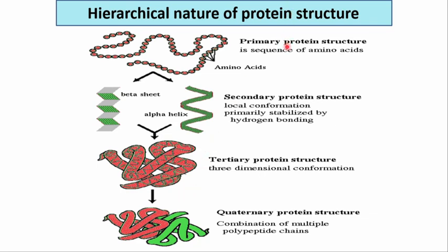Summarizing all four layers: primary structure is the amino acid sequence; second layer is local conformations; then tertiary structure — the complete 3D geometry. For proteins that are only monomeric, tertiary structure is the final level. For multimeric proteins, you must consider quaternary structure. Secondary, tertiary, and quaternary structures are all stabilized by weak forces, which also govern the multimeric nature of proteins.